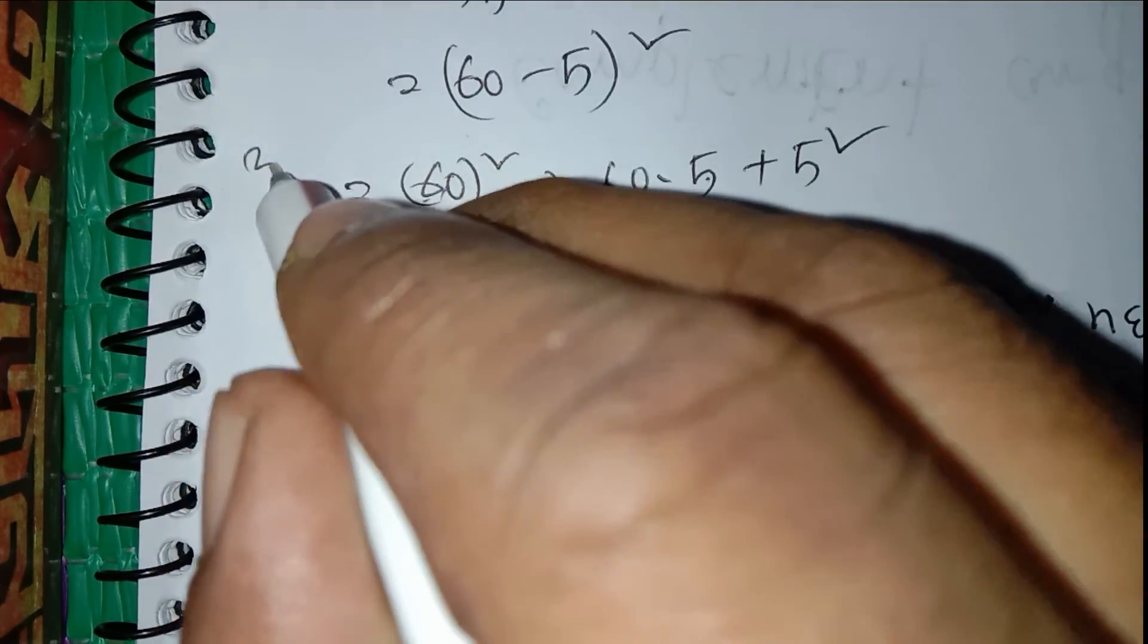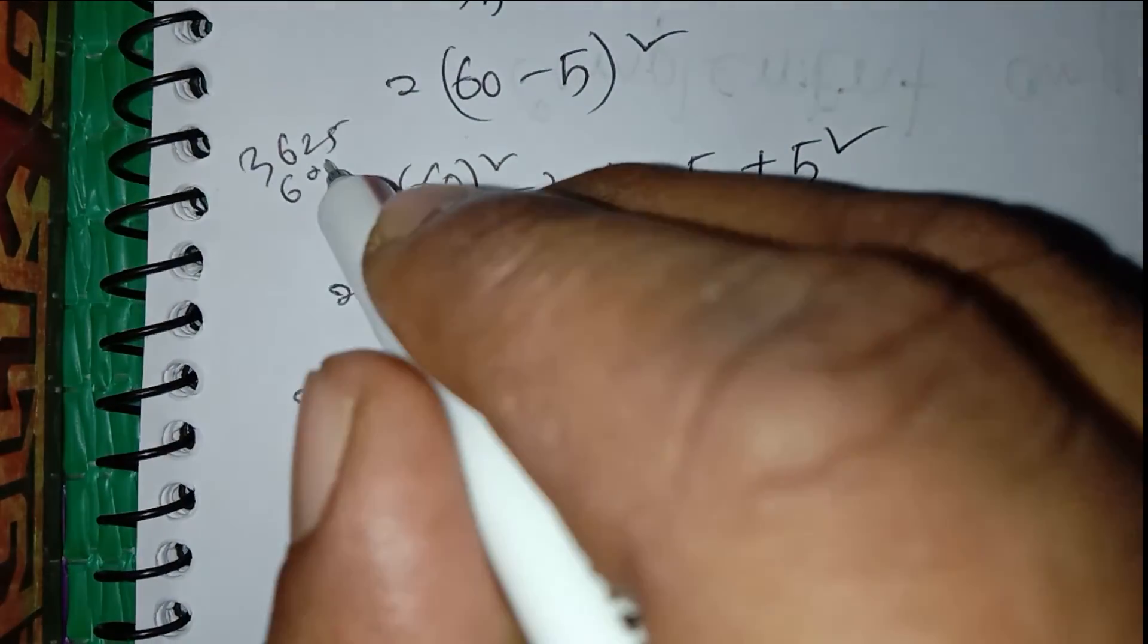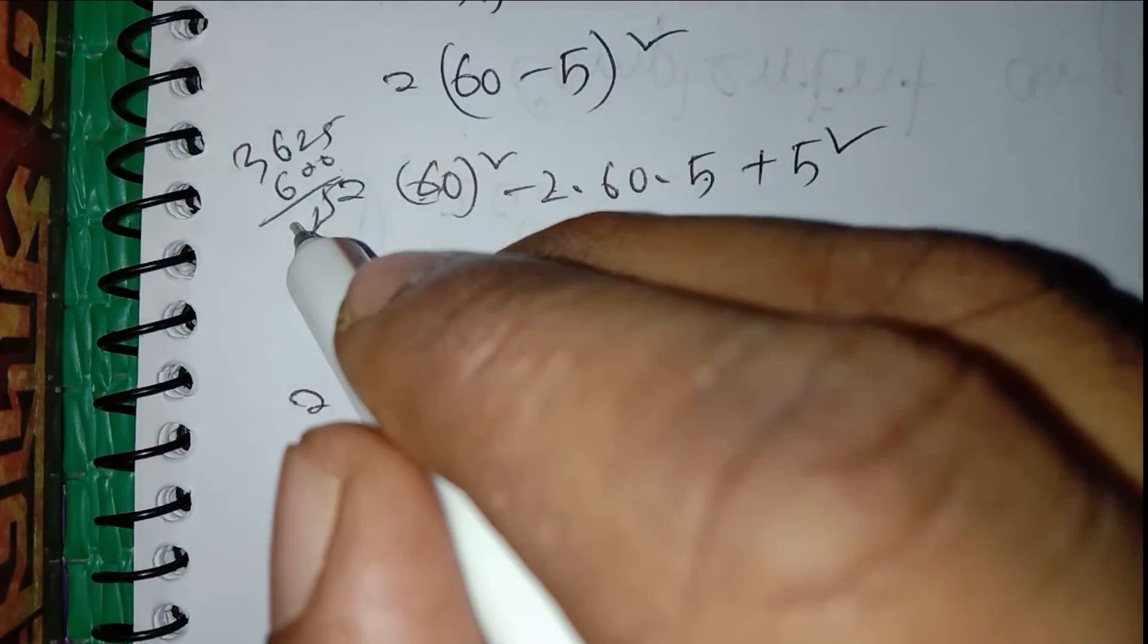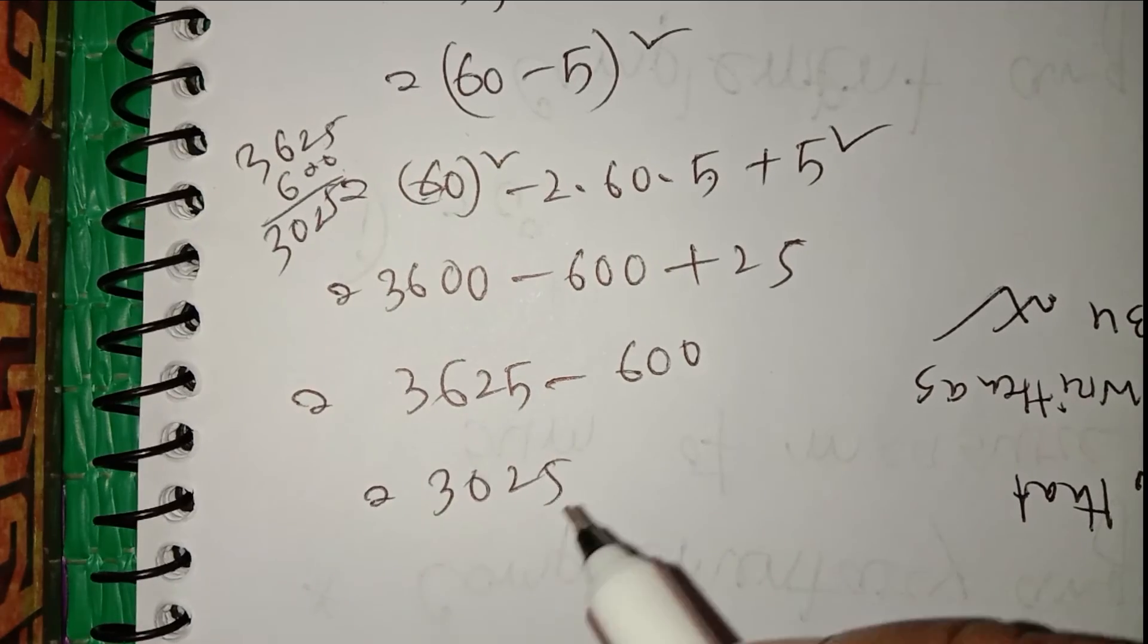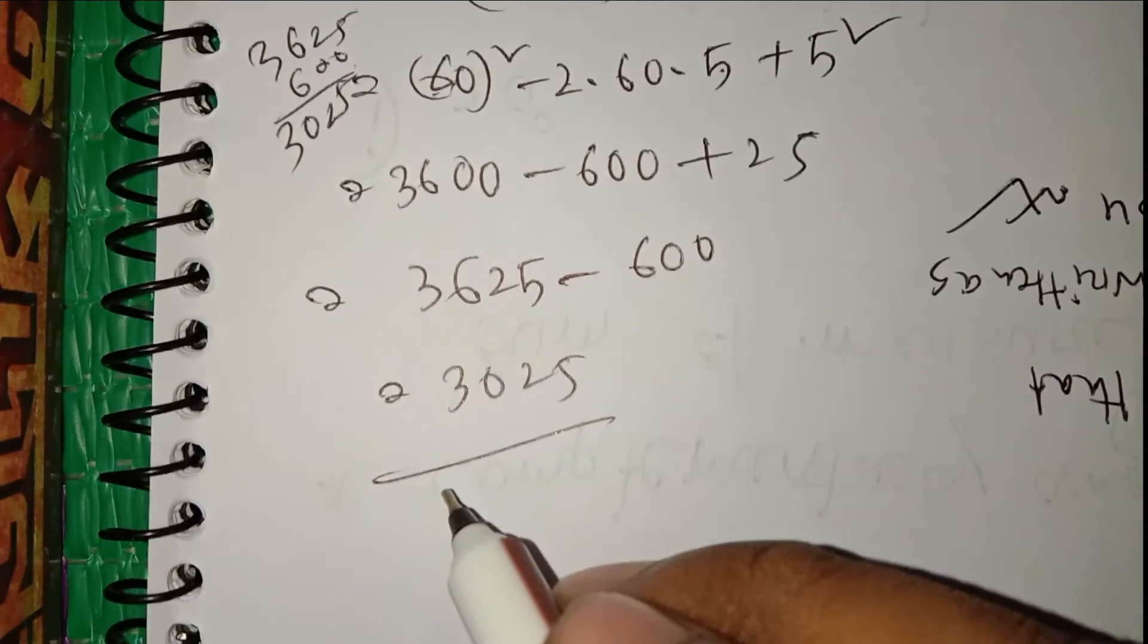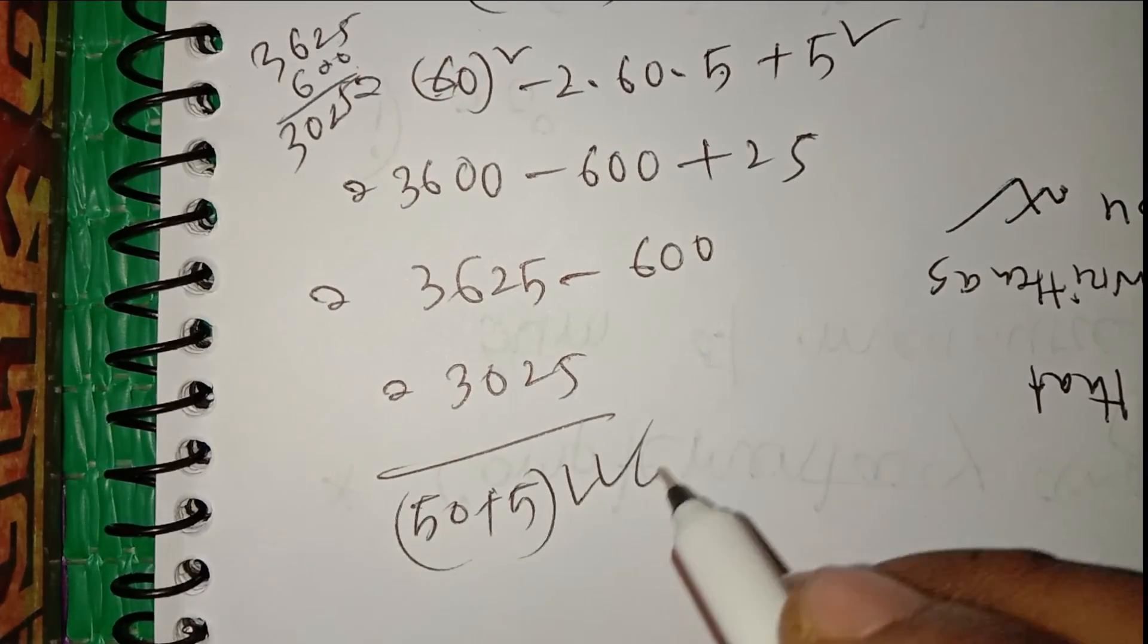3,625 minus 600 equals 3,025, which is the same as the answer of 50 plus 5 whole square.